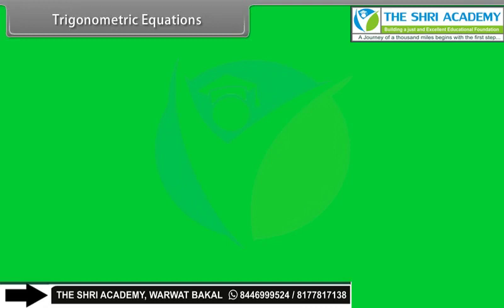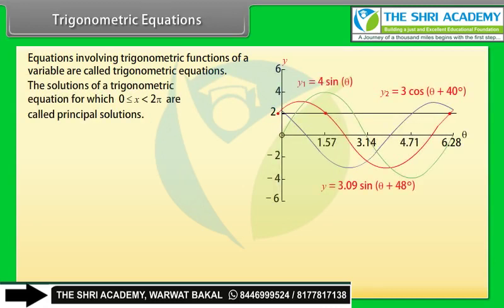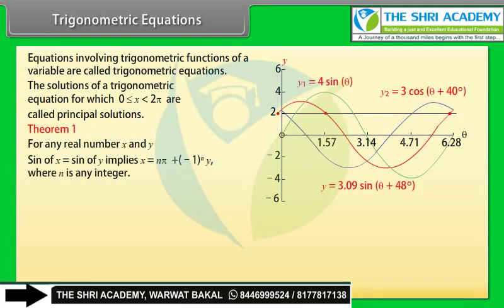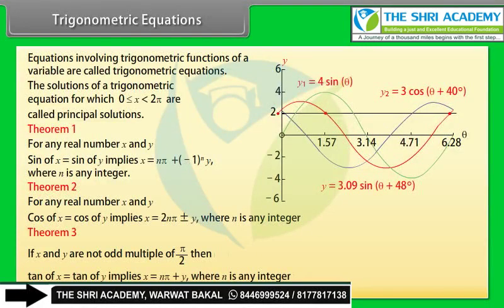Equations involving trigonometric functions of a variable are called trigonometric equations. The solutions for which 0 ≤ x < 2π are called principal solutions. Theorem 1: sin x = sin y implies x = nπ ± (−1)ⁿy, where n is any integer. Theorem 2: cos x = cos y implies x = 2nπ ± y, where n is any integer. Theorem 3: If x and y are not odd multiples of π/2, then tan x = tan y implies x = nπ + y, where n is any integer.